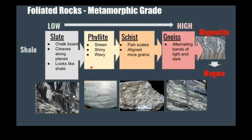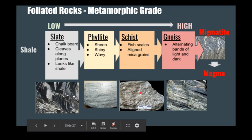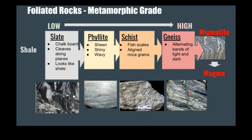Schist is the next step up. Using fish analogies, schist looks like fish scales — an alignment of fish scales or sequins is another good way to think about it. We have tiny to medium-sized mineral grains lining up and overlapping into a foliated pattern. And finally, gneiss has these alternating light and dark bands of light and dark minerals.